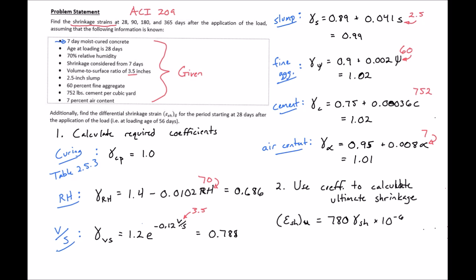What's involved in this shrinkage factor is all of our other shrinkage factors: our 1.0 times 0.686 times 0.788 times 0.99 times 1.02 times 1.02 times 1.01. And that will give us our shrinkage factor here.